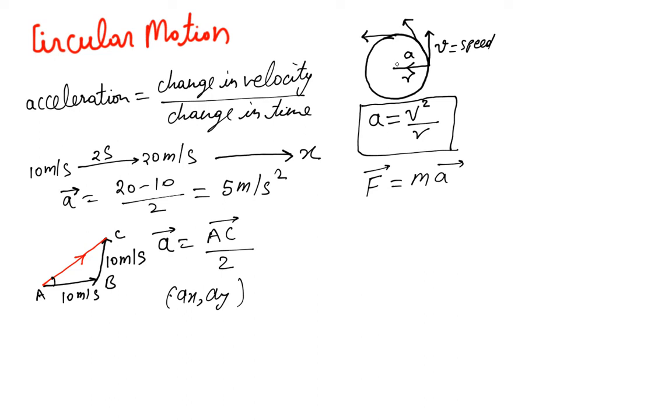This is the acceleration which is acting towards the center of the circle. Well we can understand that because the string is moving the mass, and if you draw a free body diagram you see string always pulls. So string is always pulling the stone inside and because of this we have an acceleration.